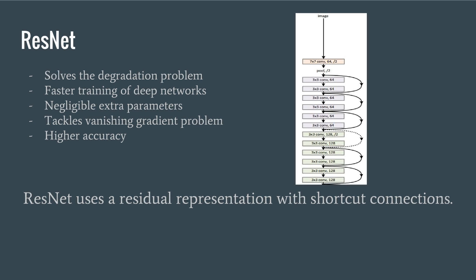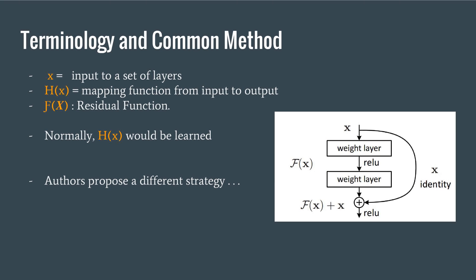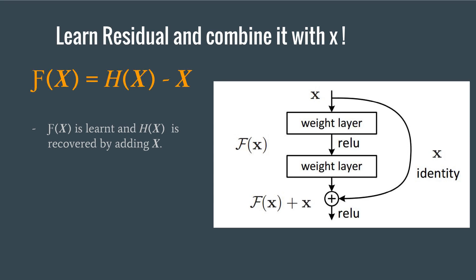The authors propose a residual network which is deepened instead of getting wider. This causes fewer parameters and a reduced effect of the vanishing gradient problem. X denotes the input to a set of layers. H(x) is the mapping function from input to output for a stack of few layers. Instead of directly learning H(x), the authors propose that the residual F(x) equal to H(x) minus x can be merged with the original input to recover H(x).